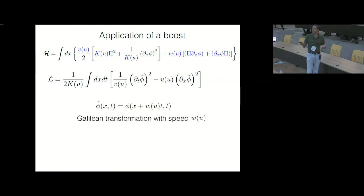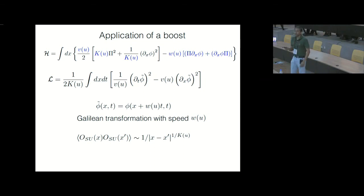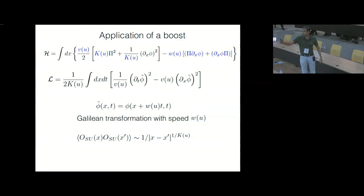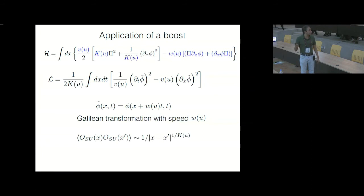Corresponding to the Hamiltonian, you can write down a Lagrangian density. It turns out the Lagrangian can be exactly of the same form as the Lagrangian for the unboosted system, but in terms of new fields phi-tilde, which can be written in terms of the old fields by making a Galilean transformation on the coordinates: x goes to x plus w(u) times t, and t remains t — and the field phi in terms of these new coordinates equals phi-tilde. So the effect of the boost can be absorbed by defining new fields via this Galilean transformation, but the effect of the boost still remains in the Luttinger parameter and v(u) — you cannot completely do away with the boost.